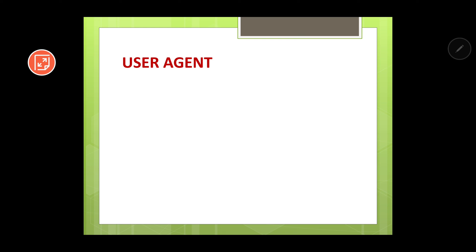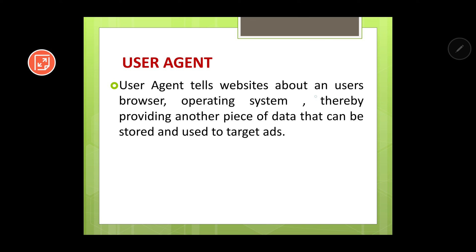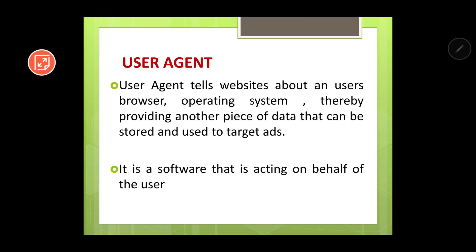The last tracking method is the user agent. When you visit a particular website, there is a virtual agent in your browser that automatically sends certain information — you do not send it yourself. This agent is known as the user agent. The user agent tells the website about a user's browser and operating system, providing another piece of data that can be stored and used to target ads. It is a software acting on behalf of the user, sending your information automatically.